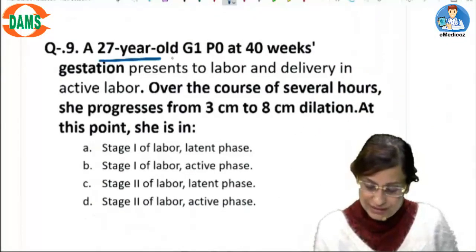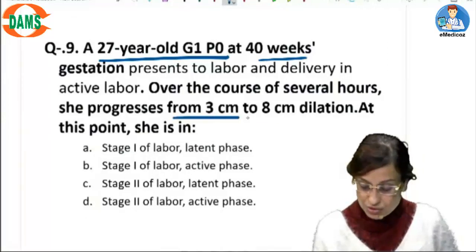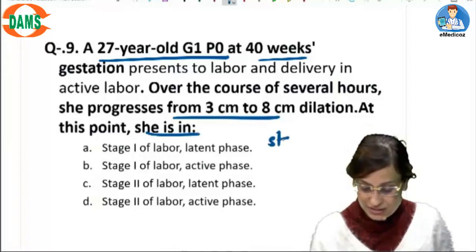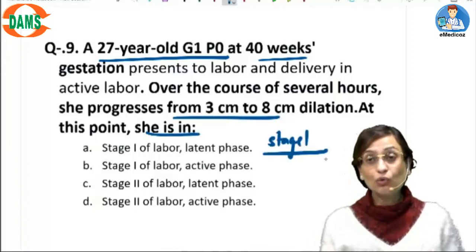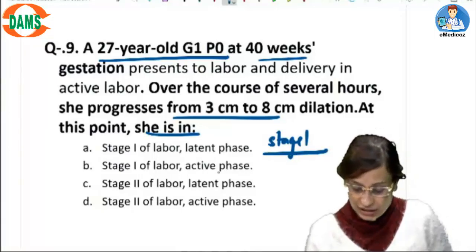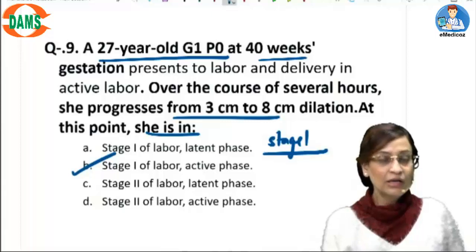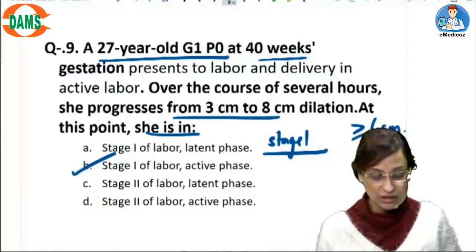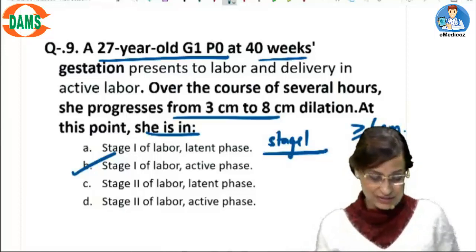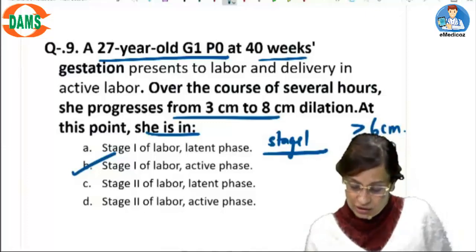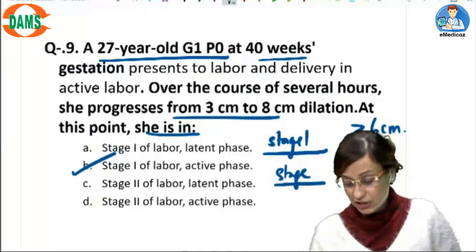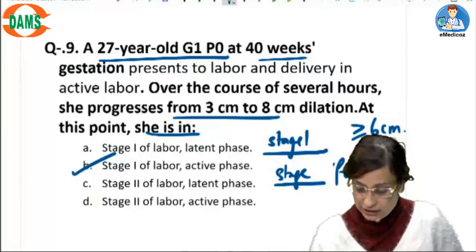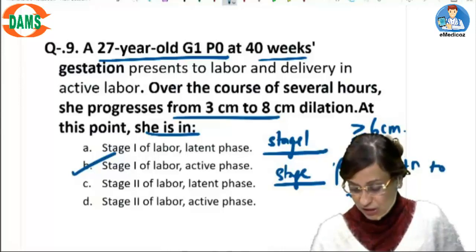A 27-year-old patient at 40 weeks has progressed from 3 cm to 8 cm — this is stage 1 of labor. From true labor to full dilatation is the first stage, and she is in the active phase of labor. As per the newer guidelines, the active phase begins at and beyond 6 cm. Stage 2 is from full dilatation to expulsion of the fetus.